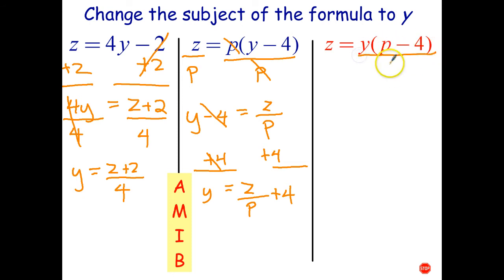So, if I divide all of that by p minus 4, and I divide the z by p minus 4, well, p minus 4 over p minus 4 cancels. I could put that in brackets if I wanted to, but I don't need to.